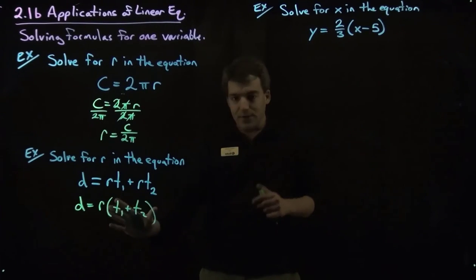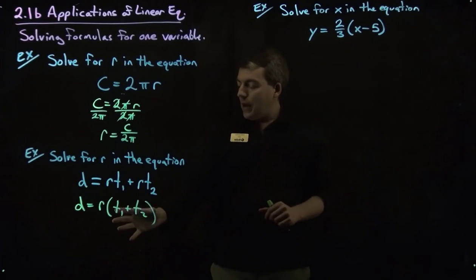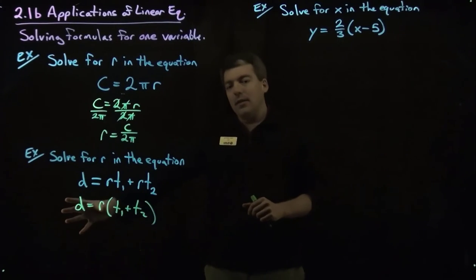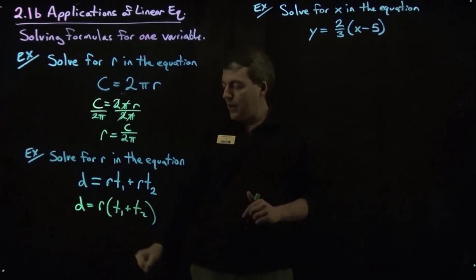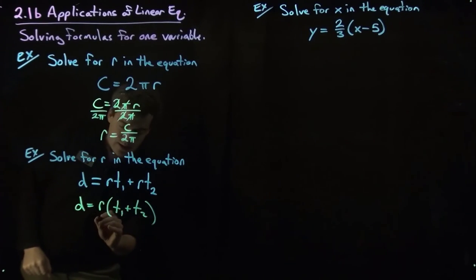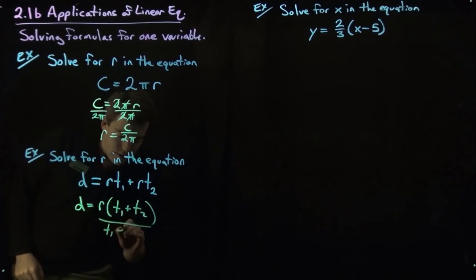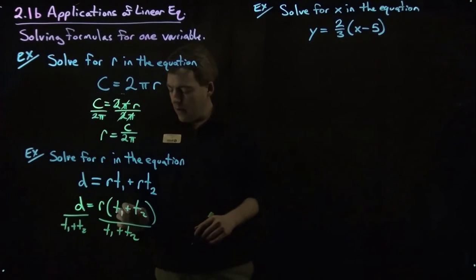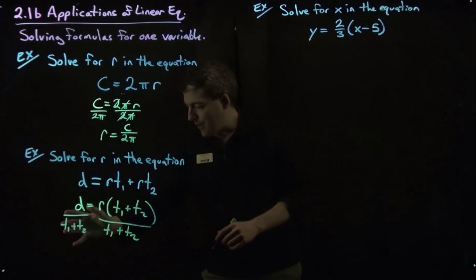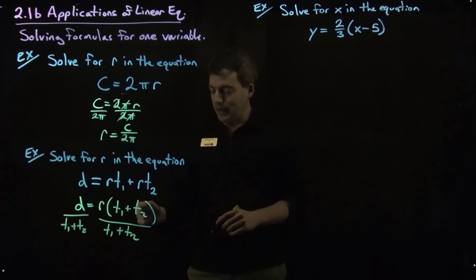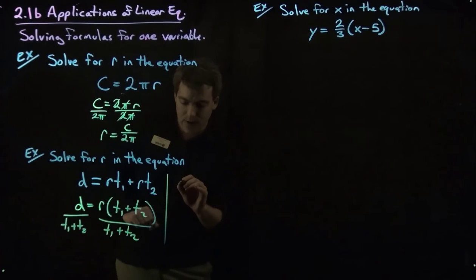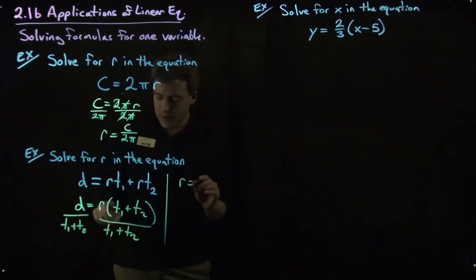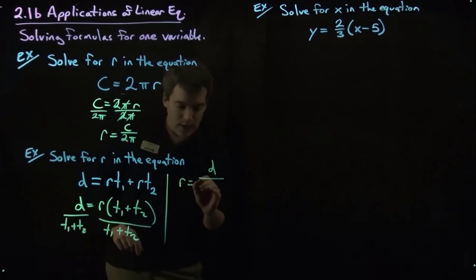Here we have the r times something. It happens to be a sum. That's no problem. And now we just divide by that to get the r by itself. So we'll divide both sides by t1 plus t2. And so this will leave r by itself on the right hand side and on the left hand side we have expression in d here. So let's go ahead and write that down. So we have r equals d divided by t1 plus t2.